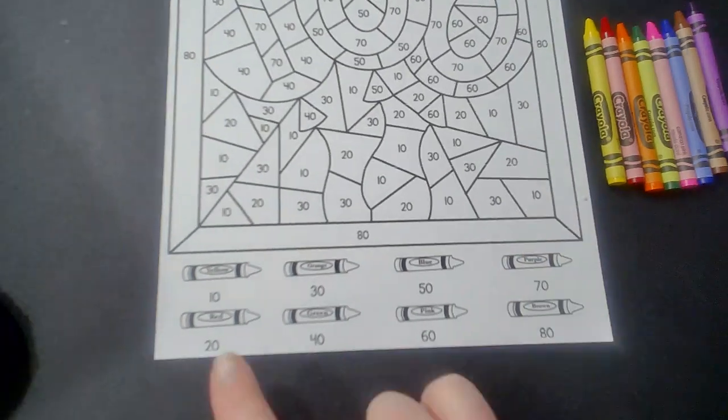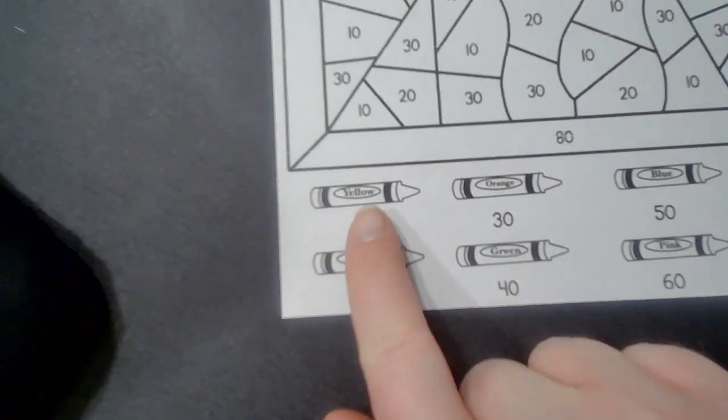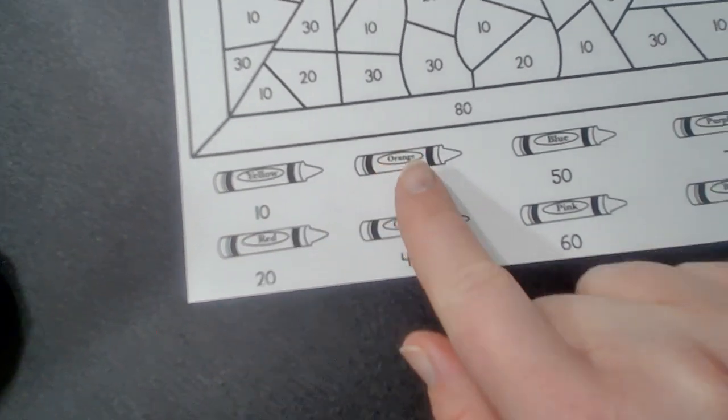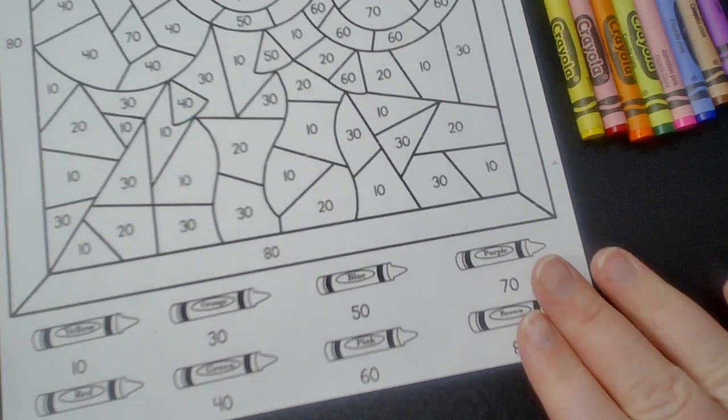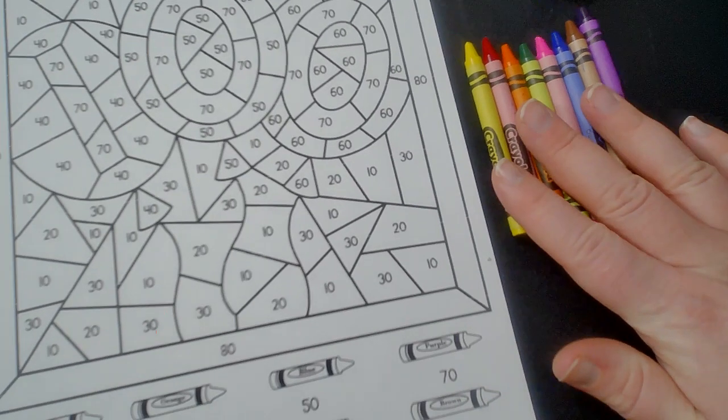The colors we need are all listed at the bottom. We need yellow, red, orange, green, blue, pink, purple, and brown. Make sure you have all of your colors ready.